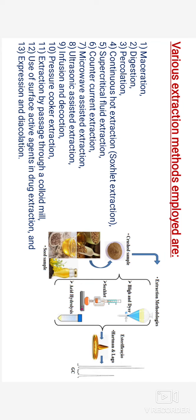The general extraction steps of herbals include: first, selection of raw material; then size reduction; then extraction using suitable methods; and selection of solvents and checking of other parameters. These are the general extraction steps of herbals.